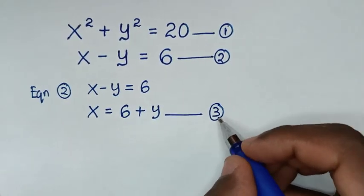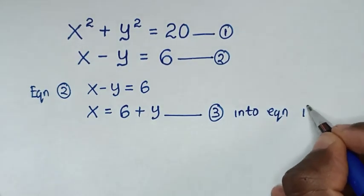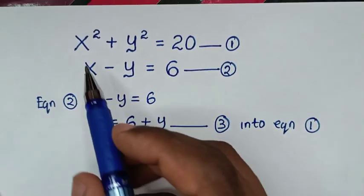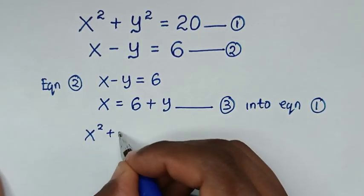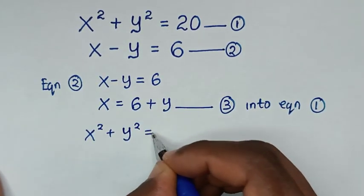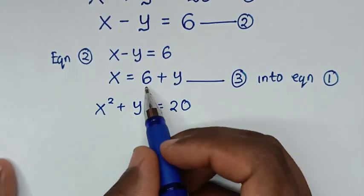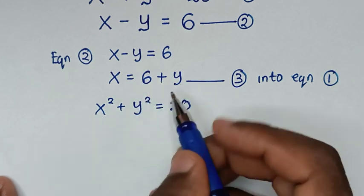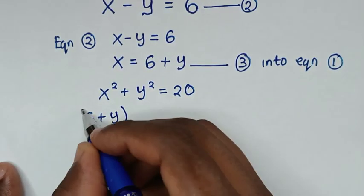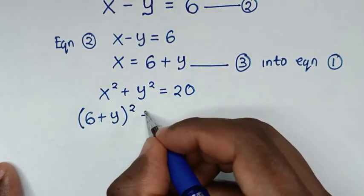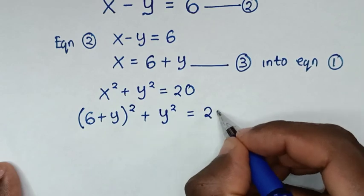Then we substitute equation 3 into equation 1. Equation 1 is x squared plus y squared is equal to 20. We replace x with 6 plus y, so it becomes (6 plus y) squared plus y squared is equal to 20.